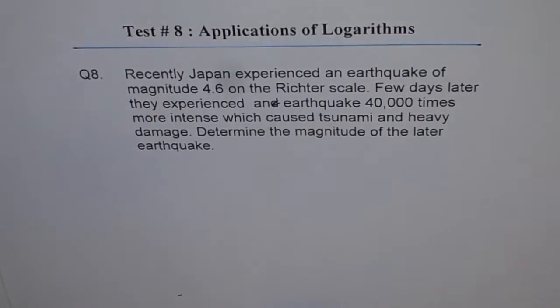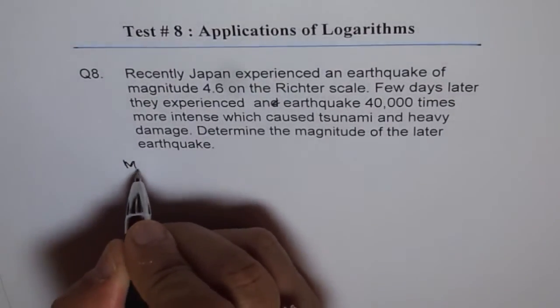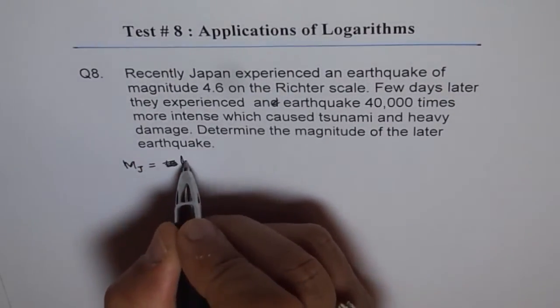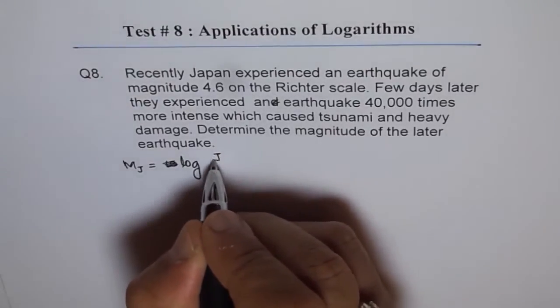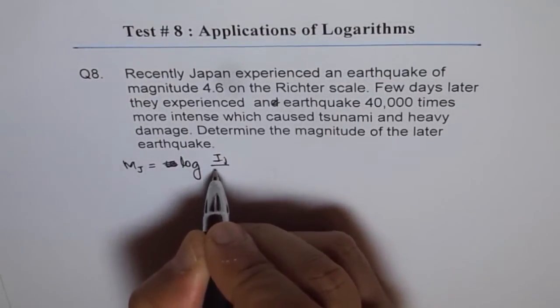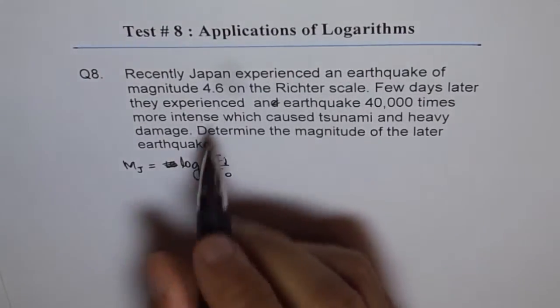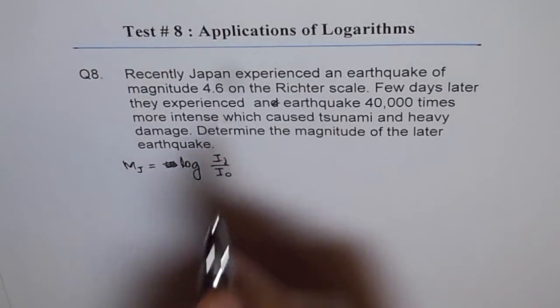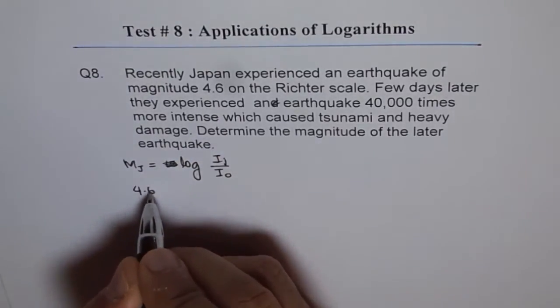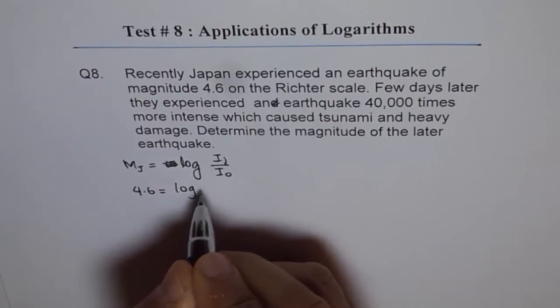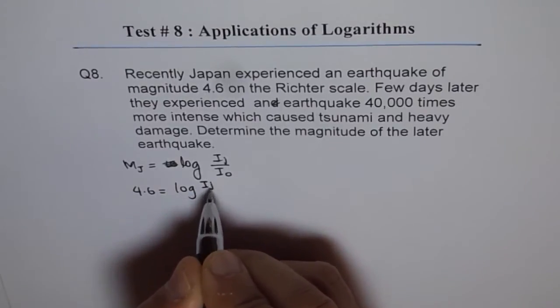The magnitude of the earthquake is given as M. Let's say the magnitude of the earthquake in Japan is log of Ij over I0. The magnitude is 4.6, so 4.6 equals log of Ij over I0.